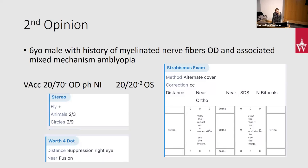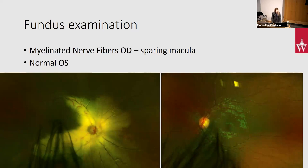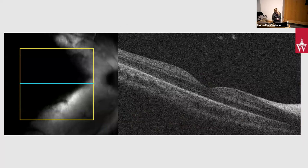I was actually the second opinion for this six-year-old male. He has a history of myelinated nerve fibers in his right eye and associated mixed mechanism amblyopia. He has a visual acuity of 20/70 when I met him, and he's doing great in his left eye at 20/20. He has some stereo and excellent alignment — he's orthophoric at distance and near. This is his fundus photo of the right and left eye. It's important to note there is sparing of the fovea; the macula doesn't appear extensively involved by the myelinated nerve fiber, which is important for visual prognosis. The OCT shows the hyperreflectivity typical of myelinated nerve fibers.